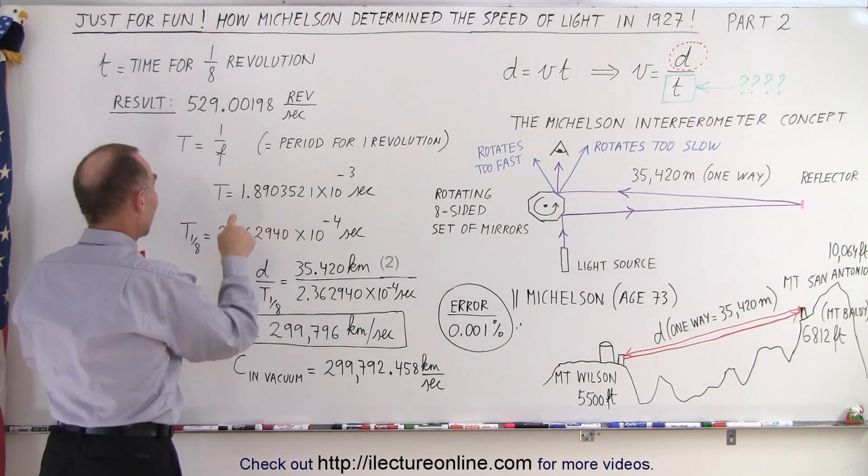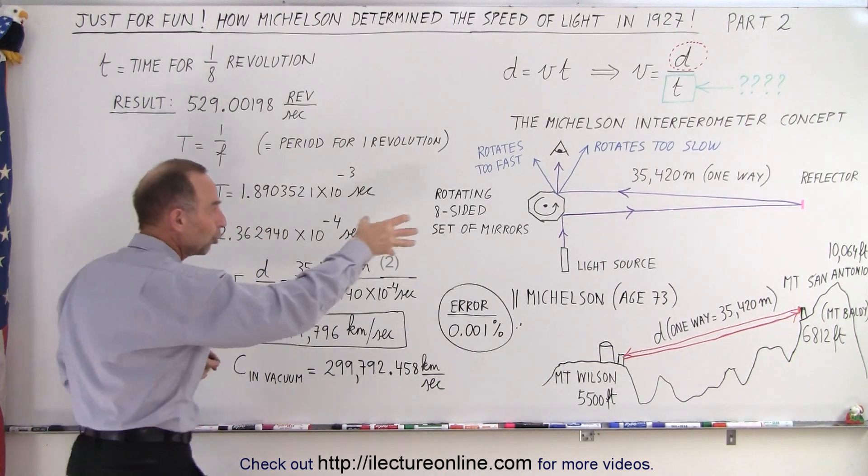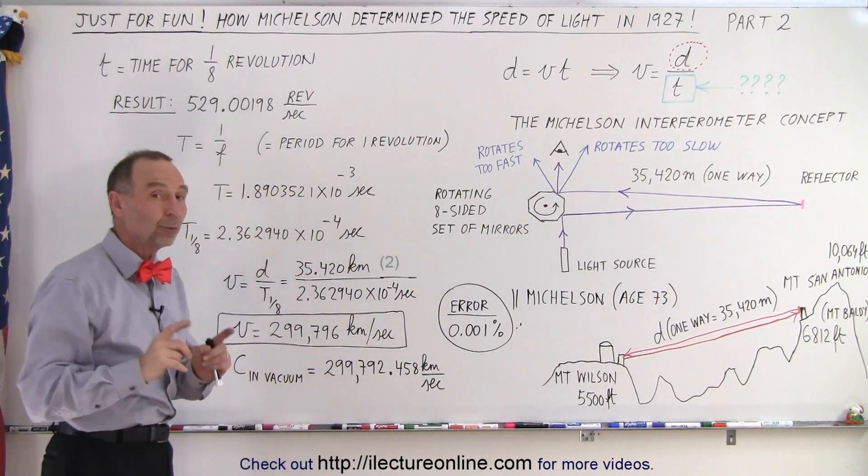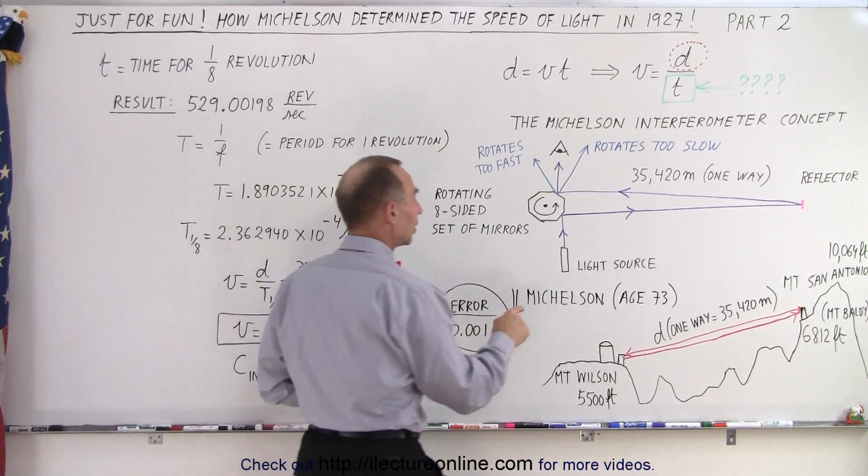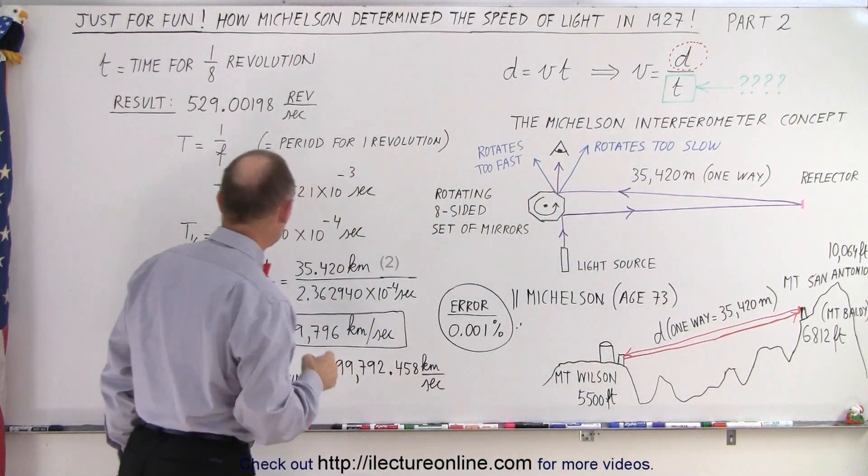That is the time it took for the wheel to turn to one-eighth of a complete revolution, which was also the time that it took the light to go from here to Mount Baldy and back. So what you do then is you take the distance, 35,420 meters, which is 35.42 kilometers,